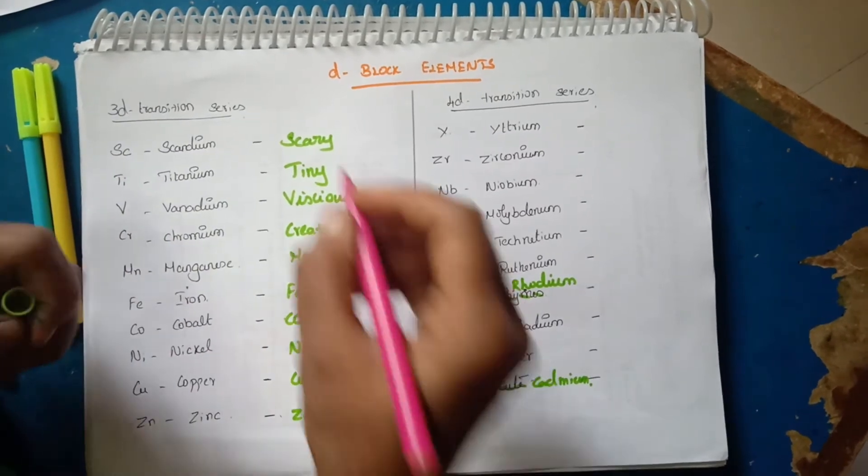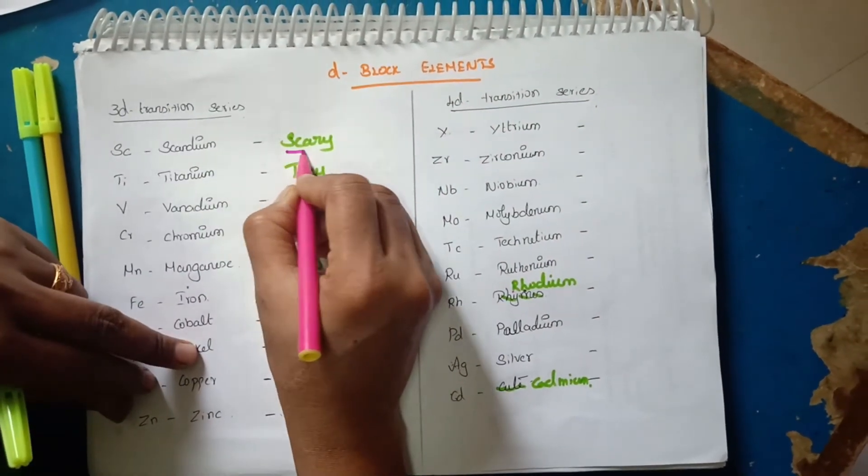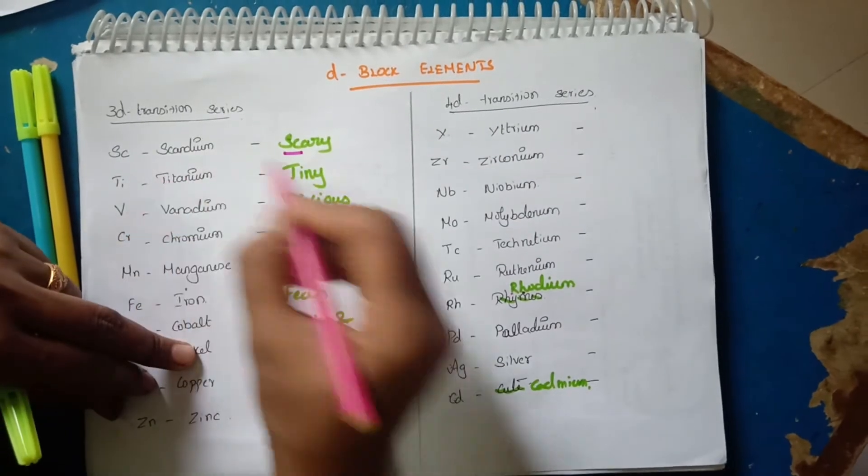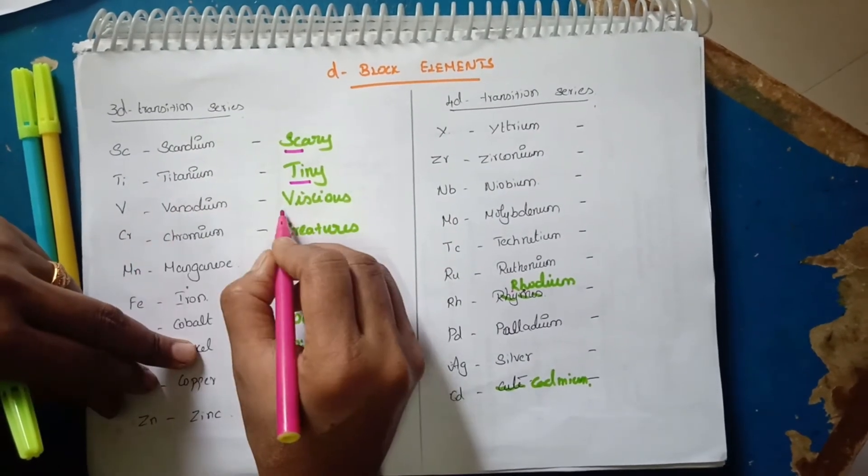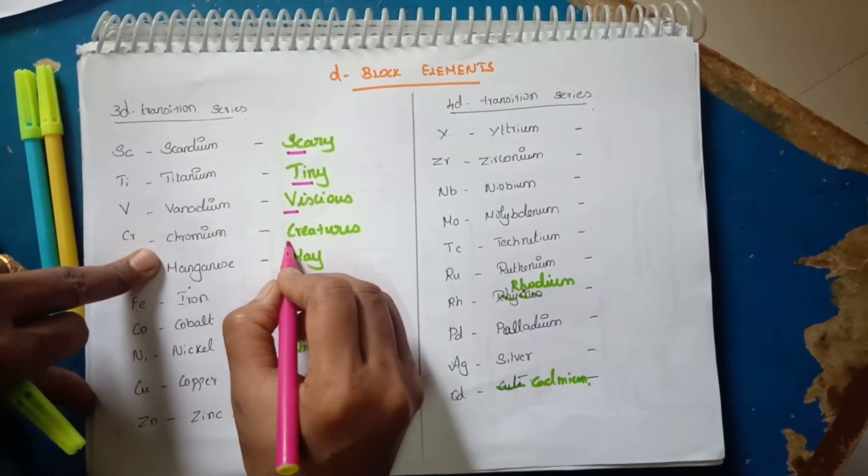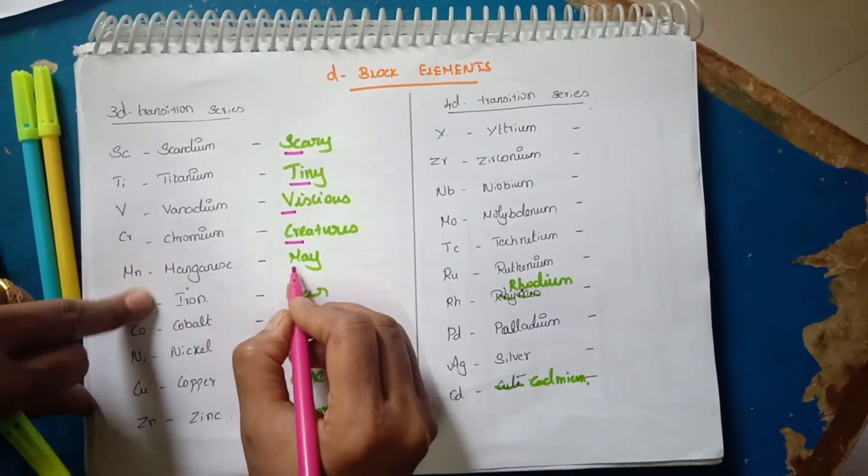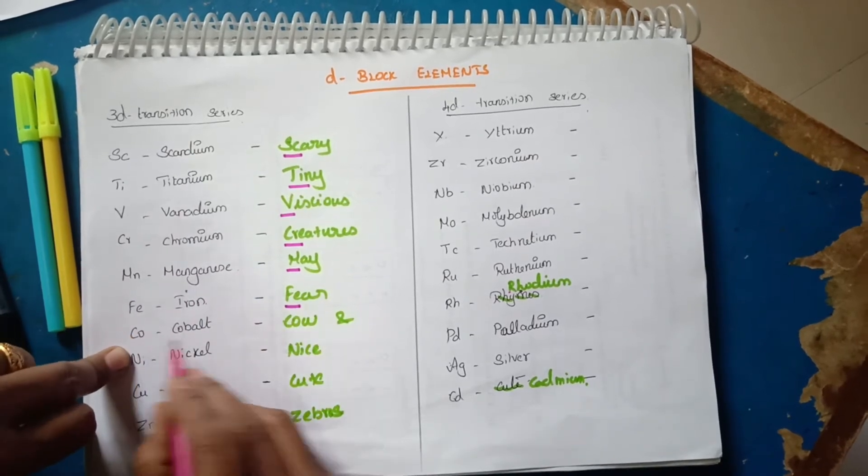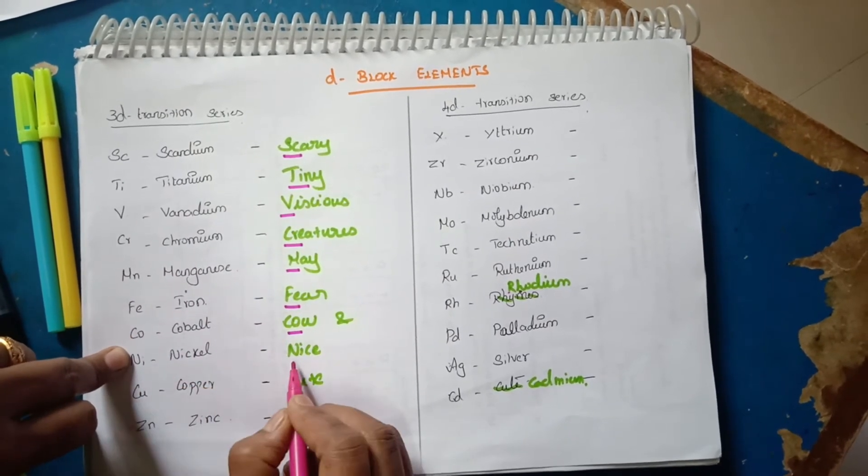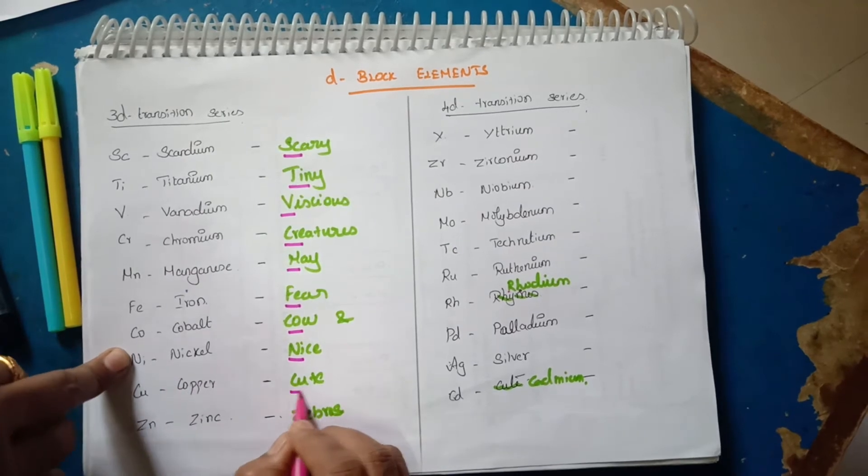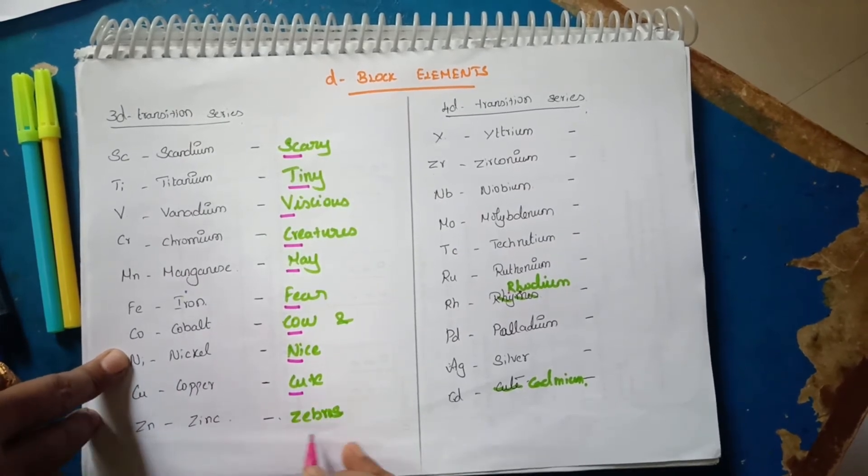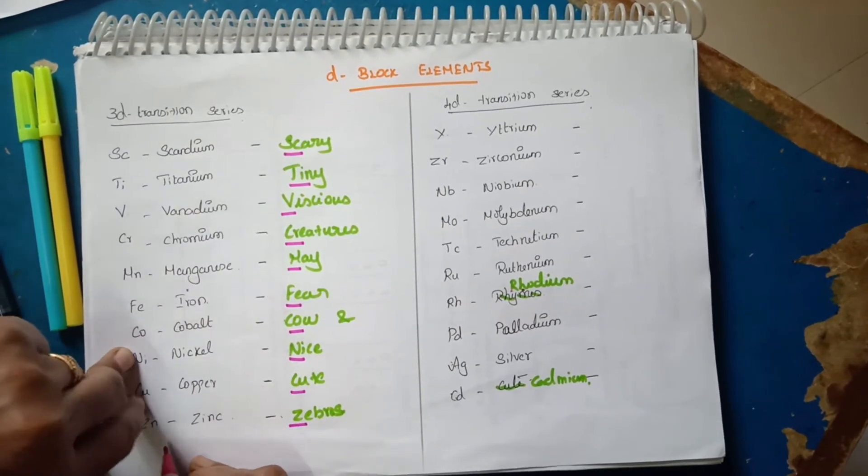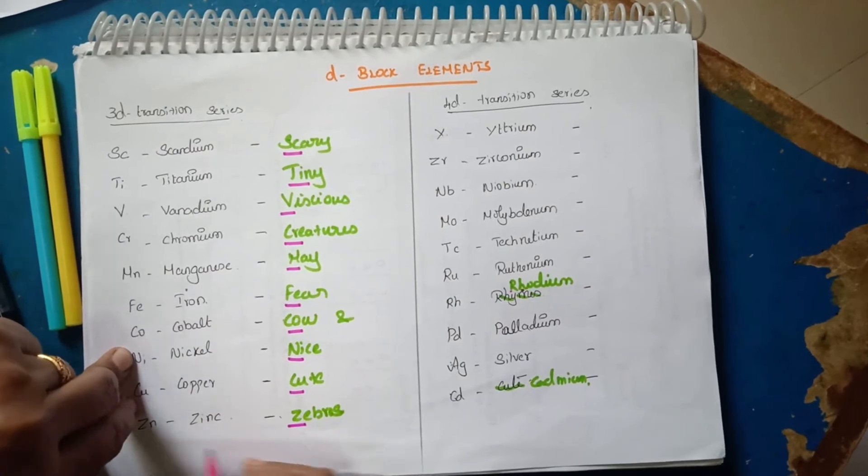First Sc indicating Scandium, Ti indicating Titanium, V indicating Vanadium, Cr indicating Chromium, M indicating Manganese, Fe indicating Iron, Co Cobalt, Ni Nickel, Cu Copper, and Zn Zinc.